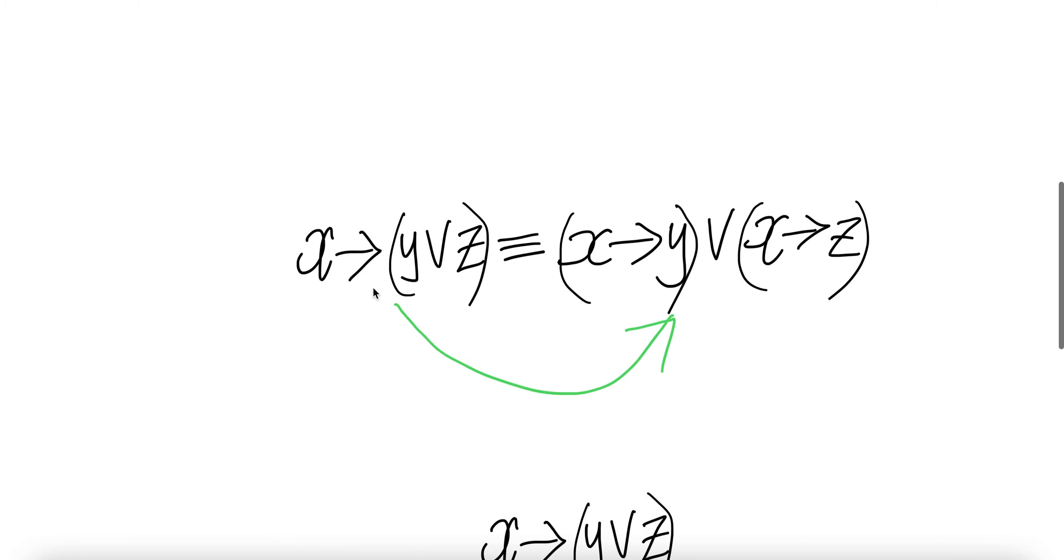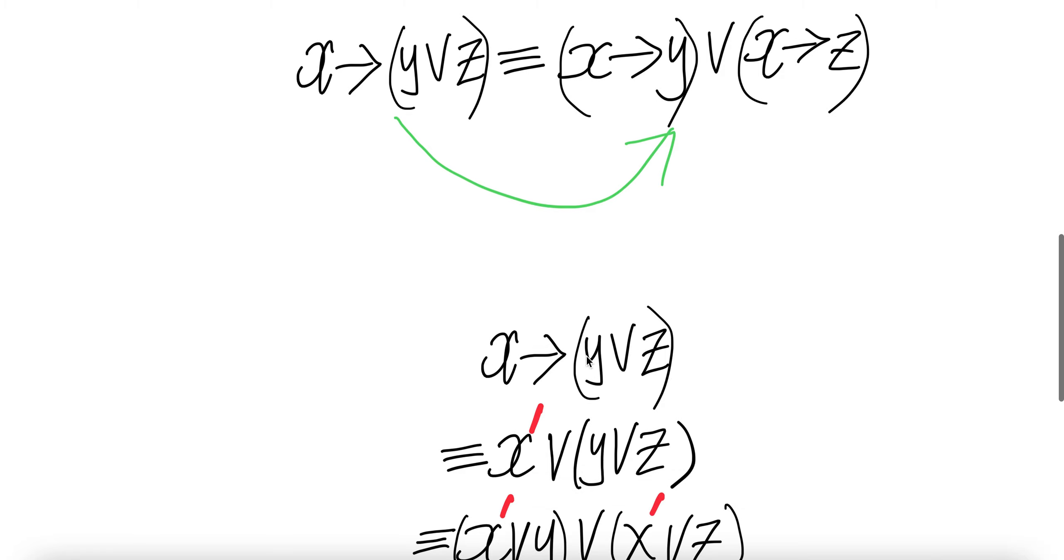Now we're going to show from the left equals the right. Start with x imply y or z.